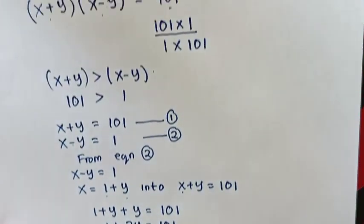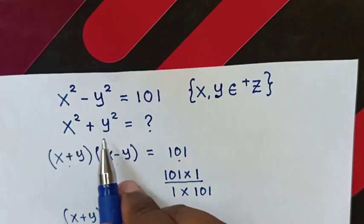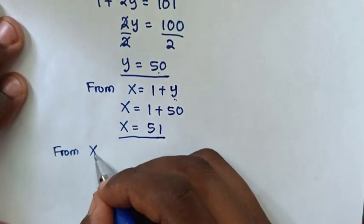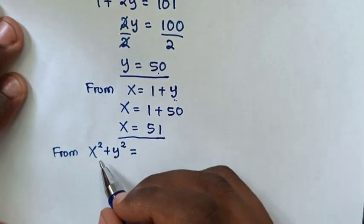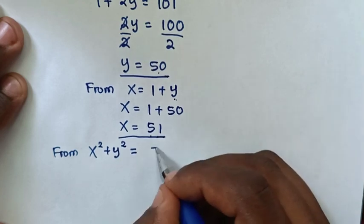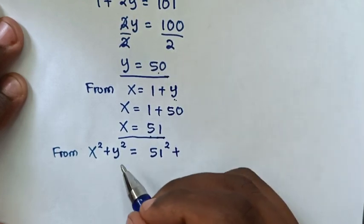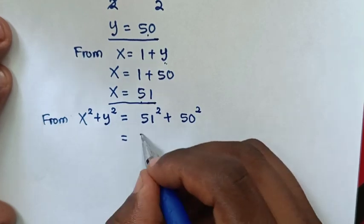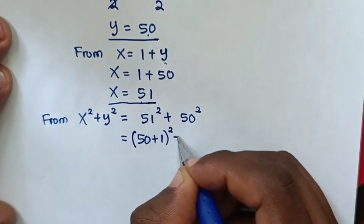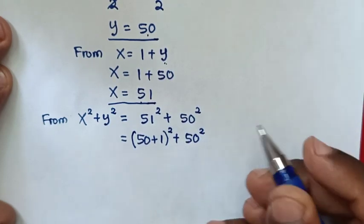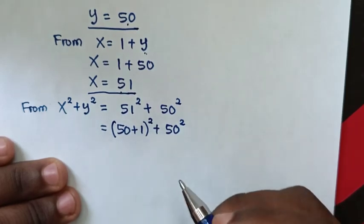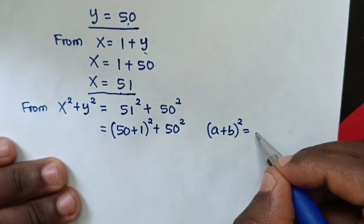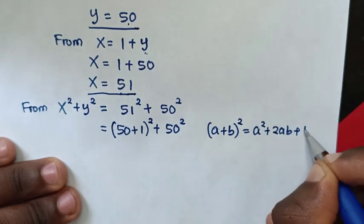Now from our problem, we need to find x squared plus y squared. With x equals 51 and y equals 50, we compute 51 squared plus 50 squared. We rewrite 51 as 50 plus 1, giving us (50+1) squared plus 50 squared, and apply the rule (a+b)² = a² + 2ab + b².